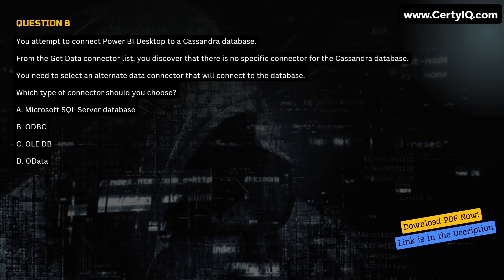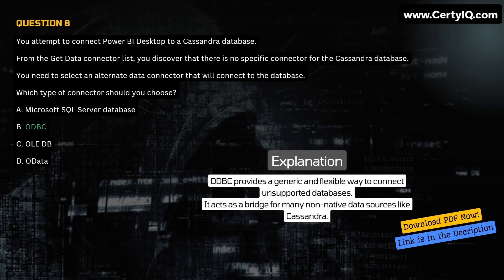Question 8. You attempt to connect Power BI Desktop to a Cassandra database. From the Get Data connector list, you discover that there is no specific connector for the Cassandra database. You need to select an alternate data connector that will connect to the database. Which type of connector should you choose? A. Microsoft SQL Server Database. B. ODBC. C. OLEDB. D. OData. Correct answer is B. Explanation: ODBC provides a generic and flexible way to connect to unsupported databases. It acts as a bridge for many non-native data sources like Cassandra.